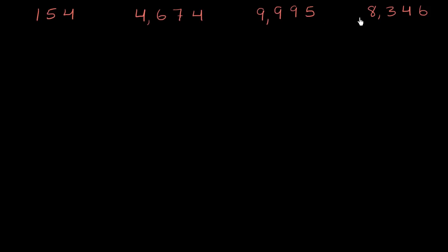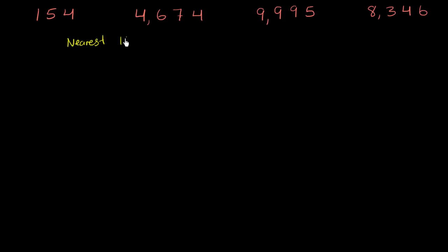We've got four numbers here. What I want to do is try to round each of these to the nearest 10 and to the nearest 100. I encourage you to pause the video and try that right now. Let's make two columns — one for the nearest 10, and another column for the nearest 100.